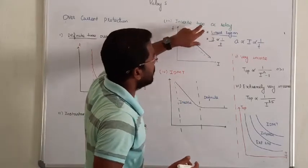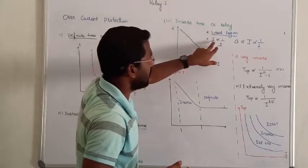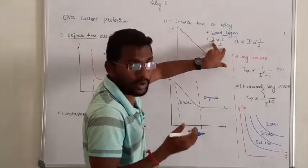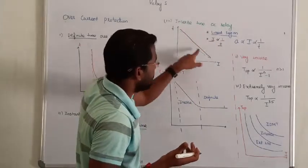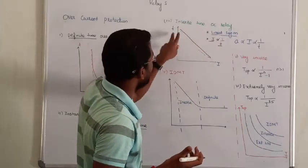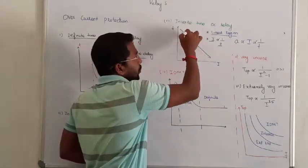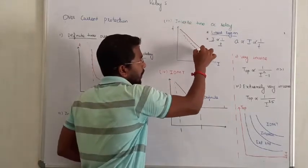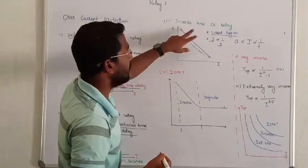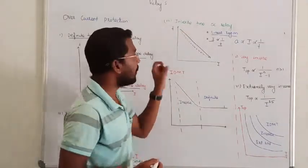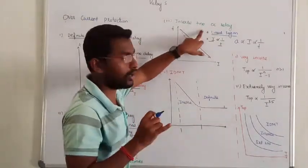In the inverse time overcurrent relay, ideally there will be a linear relation between time and current. Practically, there will be a parabolic curve. That is about inverse time relay — it operates in the linear region, where current and time are inversely related.